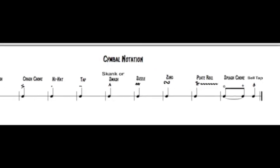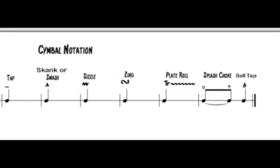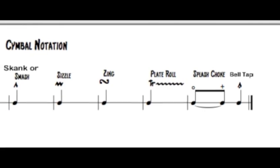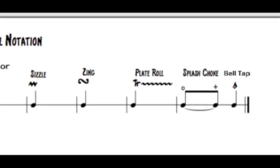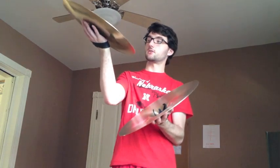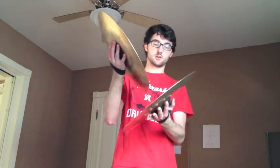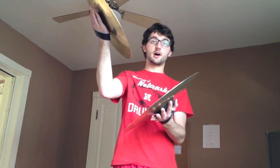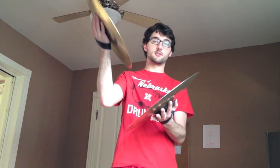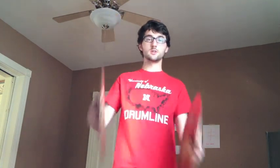The final one that I added is the housetop with the dot under it. That's a bell tap, where you take your right cymbal and hit it off the bell of your left thumb. I hope that helps as you're going through your handbook, and we'll see you.